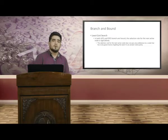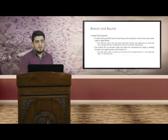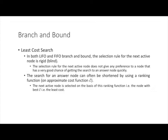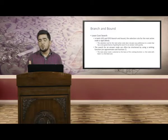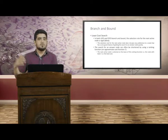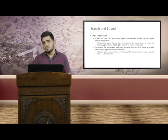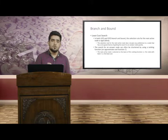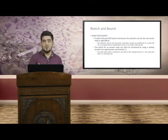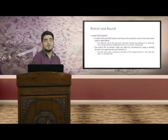None of these strategies gives any preference to a node in the queue. However, the search for an answer node can often be shortened — that is what least cost branch and bound is all about — by using a ranking function based on the approximate cost C-cap. We can choose one of the live nodes which has a greater chance of leading to the solution node, and it is possible that node would be the one with the best value for the approximate cost function C-cap.